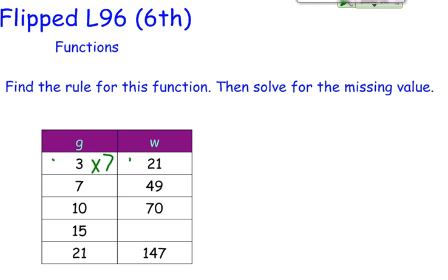By doing this, we've now determined that the rule for this is our unknown. In this case, we have the letter g. So g times 7 is going to give us a w.